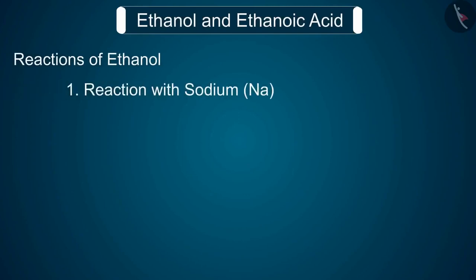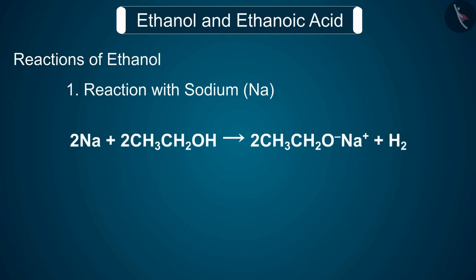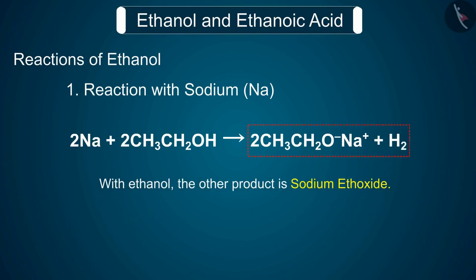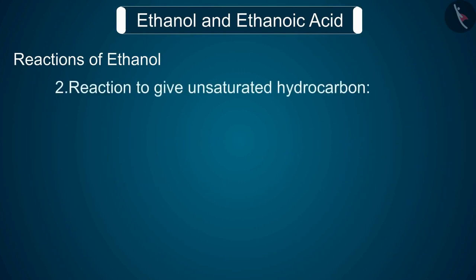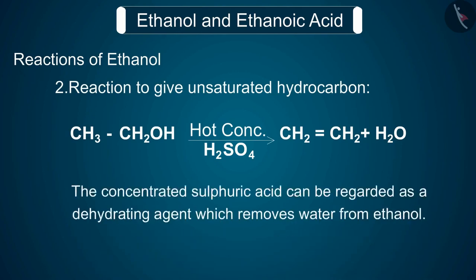Reaction 1: Reaction with sodium (Na). Alcohols react with sodium leading to the evolution of hydrogen. With ethanol, the other product is sodium ethoxide. Reaction 2: Reaction to give unsaturated hydrocarbon. Heating ethanol at 443 K with excess concentrated sulfuric acid results in the dehydration of ethanol to give ethene. The concentrated sulfuric acid acts as a dehydrating agent which removes water from ethanol.